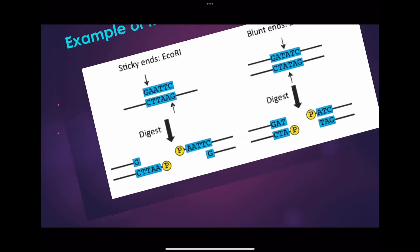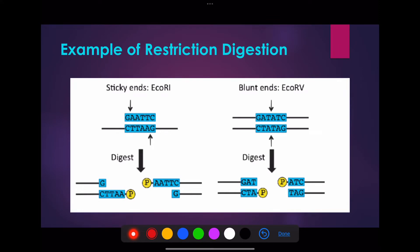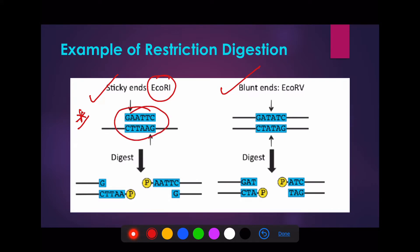Let's look at an example of restriction enzyme digestion. As we can see in this picture, there are two different types of restriction digestion that produce DNA fragments either with sticky ends or with blunt ends. A restriction enzyme named EcoRI can recognize a specific sequence GAATTC in the 5' to 3' direction and cleaves the DNA at the GA site, producing sticky ends as shown here.